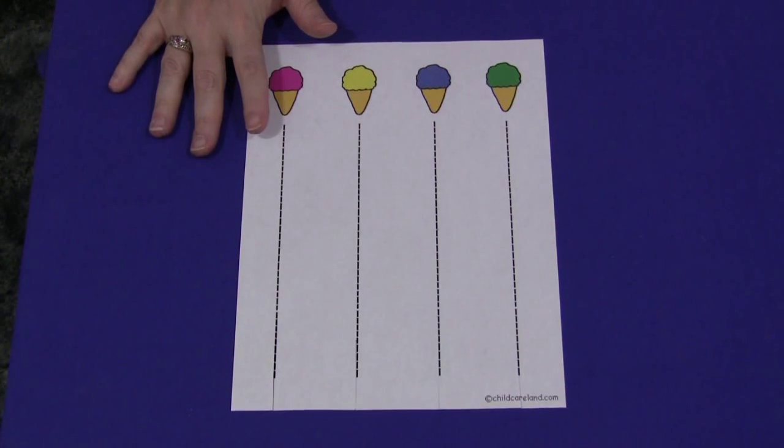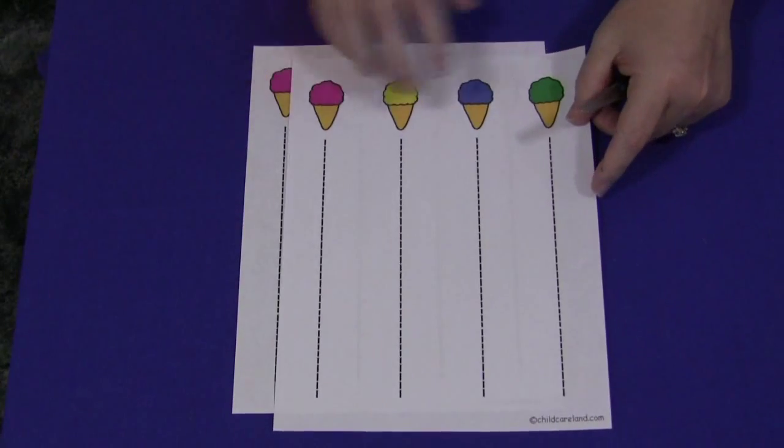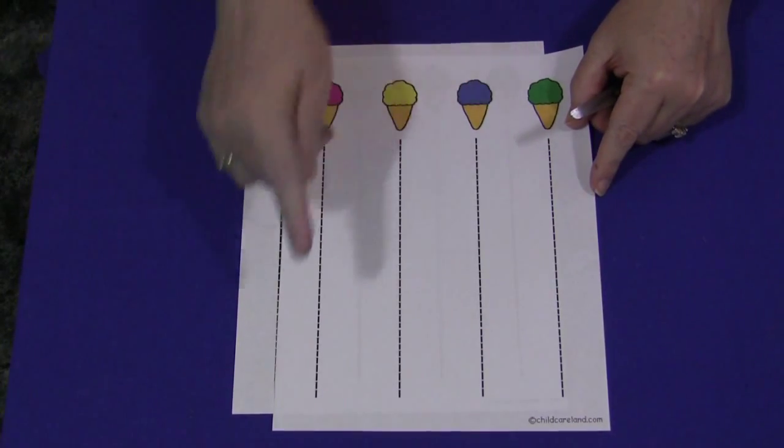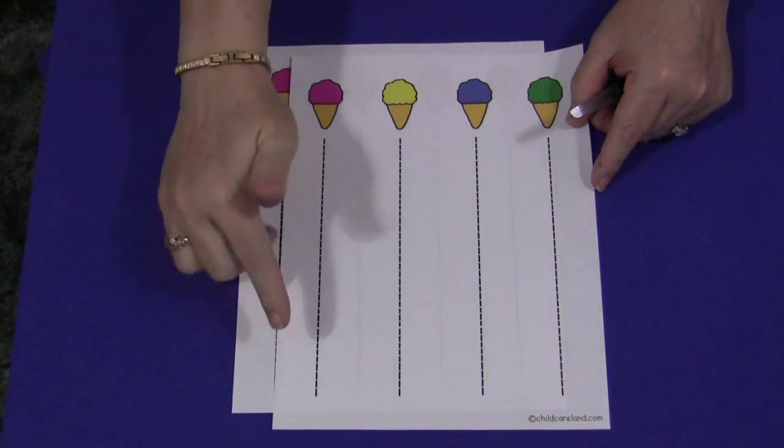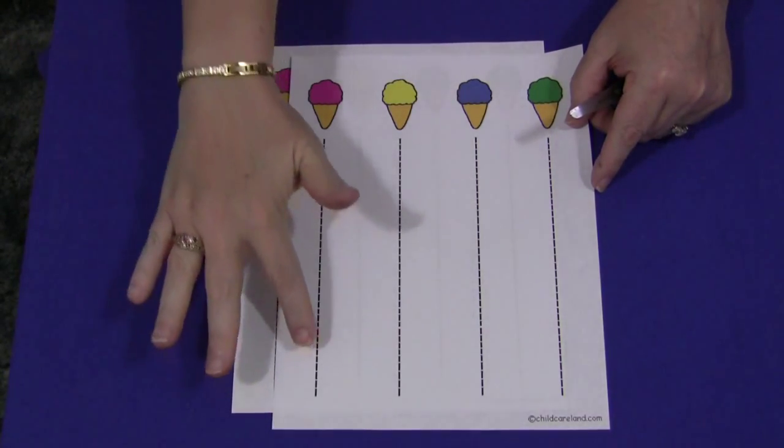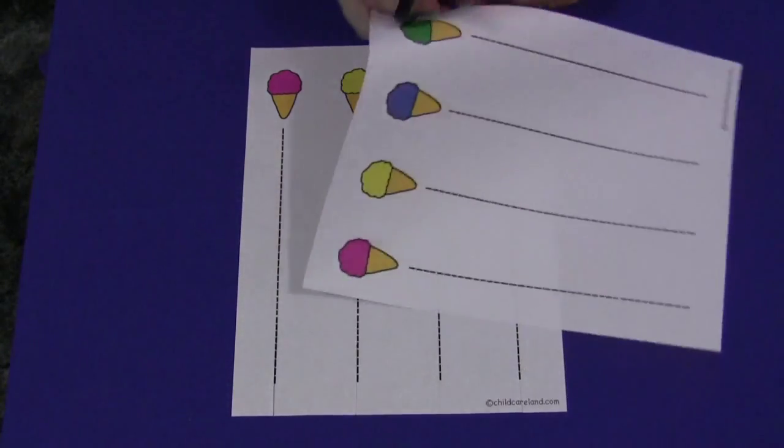With this activity, there's four ice cream cones on here and then there's four lines that will go up to the ice cream cones and the child would need to, as best as he or she can, follow the lines up to the ice cream cone.